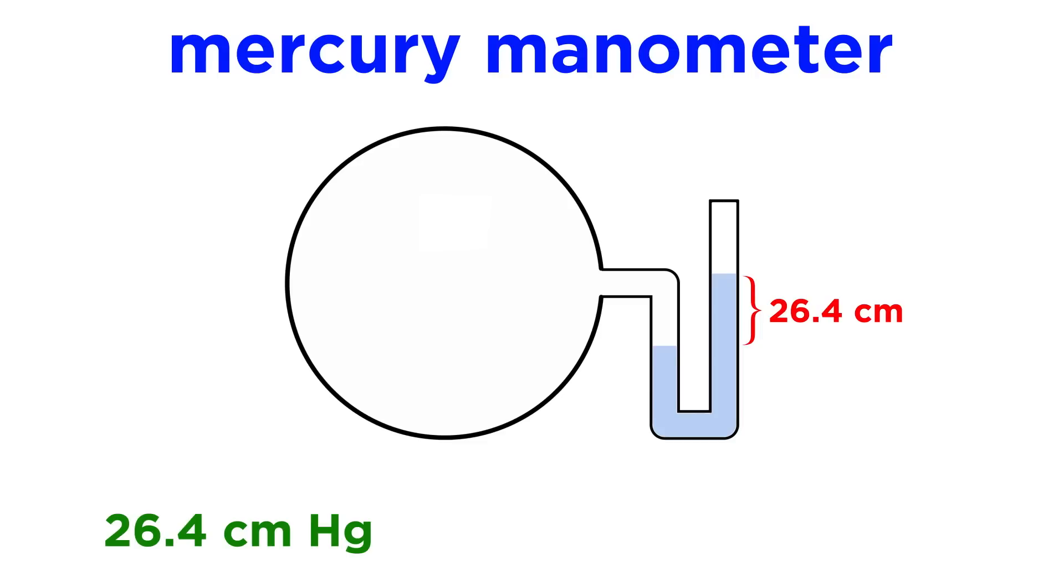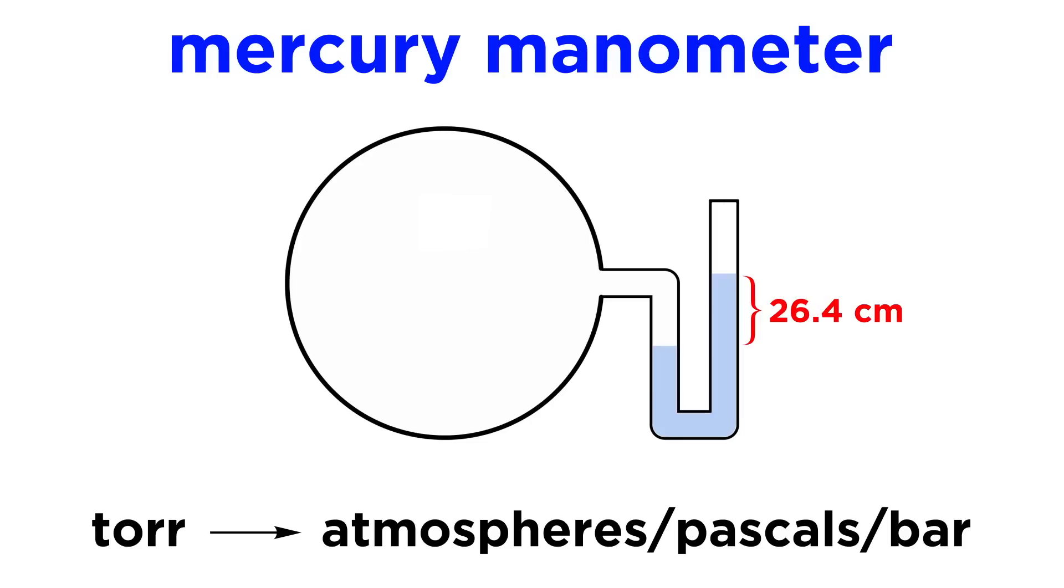If we want to use torr, we can just take our value in centimeters of mercury and convert into millimeters of mercury, which we will treat as being equivalent to torr. From torr we could convert into atmospheres, pascals, or bar.